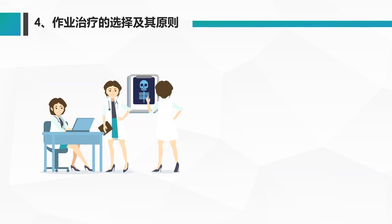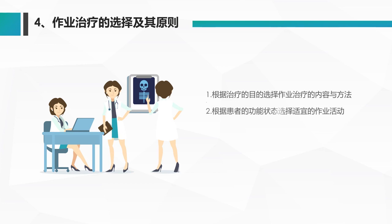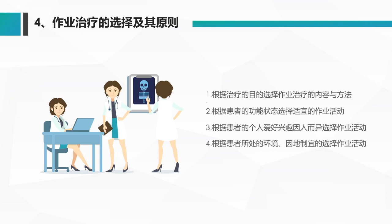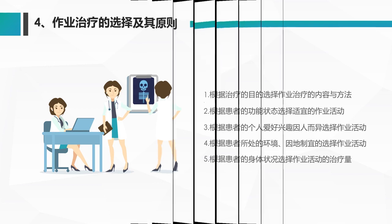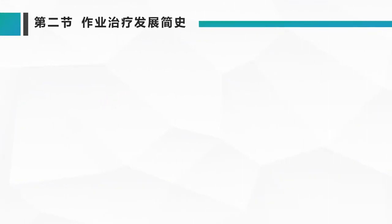作业治疗的选择和原则，主要从五个方面进行选择：第一，根据治疗目的去选择作业疗法；第二，根据患者的功能状态选择适宜的作业活动；第三，根据患者的个人爱好和兴趣，因人而异地选择作业活动；第四，根据患者所处的环境，因地制宜地去选择作业活动；第五，根据患者的身体状况来选择作业活动的治疗量。